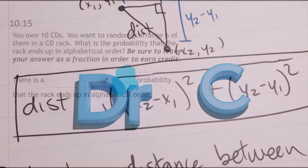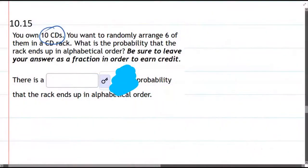We have 10 CDs and we want to randomly arrange 6. So we're going to choose 6 out of 10 and we're going to use the choose function.